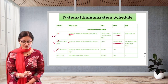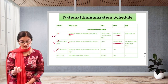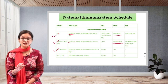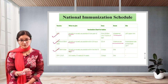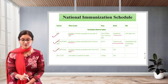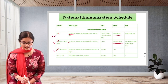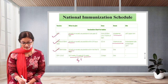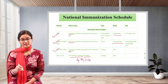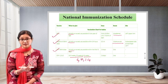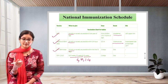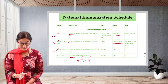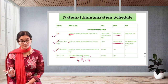OPV doses 1, 2, and 3 are given at the 6th, 10th, and 14th weeks. You can remember this as 6, 10, 14 — add 4 each time: 6 plus 4 is 10, 10 plus 4 is 14. Again, only 2 drops are given orally. IPV — inactivated polio vaccine — is given at 14th week, 0.5 ml intramuscular at the anterolateral side of the mid-thigh on the right side, so you rotate the injection site.